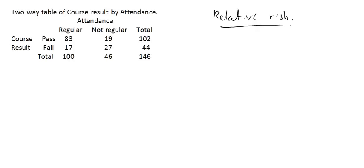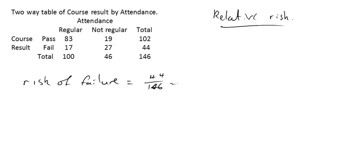This is some data that probably is not true. It came from the University of Auckland, and I think it may be fictitious. Who cares? It's about whether people attending courses with regular attendance pass or fail. We know from our own data at school that attending school regularly is a much better indicator for passing than not. The risk of failure from last time was the probability of failing out of everyone, which is 44 out of 146.